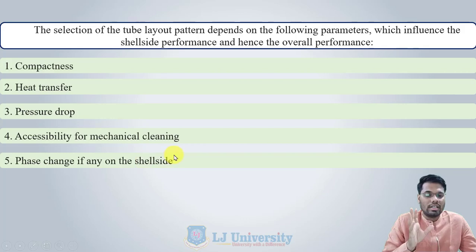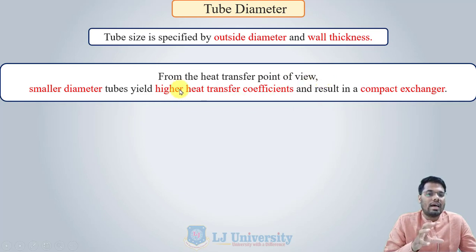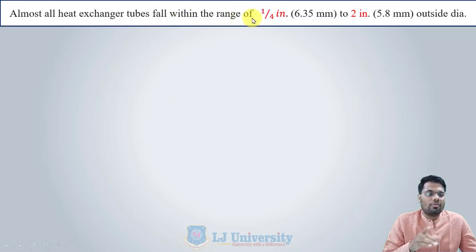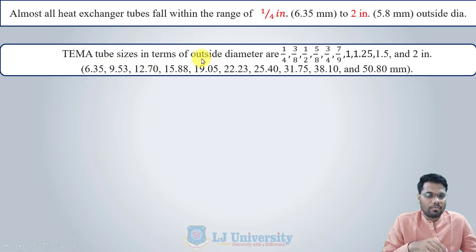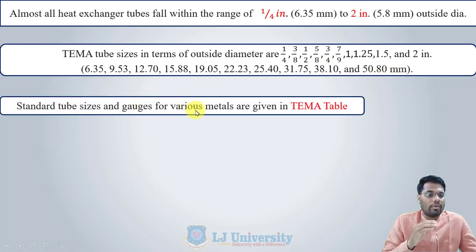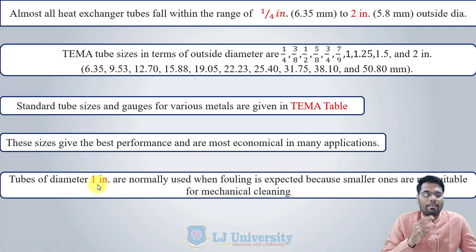Tube size is specified by outside diameter and wall thickness. From a heat transfer perspective, smaller diameter tubes yield higher heat transfer coefficients and result in a more compact heat exchanger. Larger diameter tubes are easier to clean, more rugged, and necessary when allowable tube side pressure drop is small. Almost all heat exchanger tubes fall within the range of 1/4 inch (6.35 mm) to 2 inch (50.80 mm) outside diameter. TEMA standard sizes range from 6.35 mm to 50.80 mm, giving the best performance and most economical results in many applications.